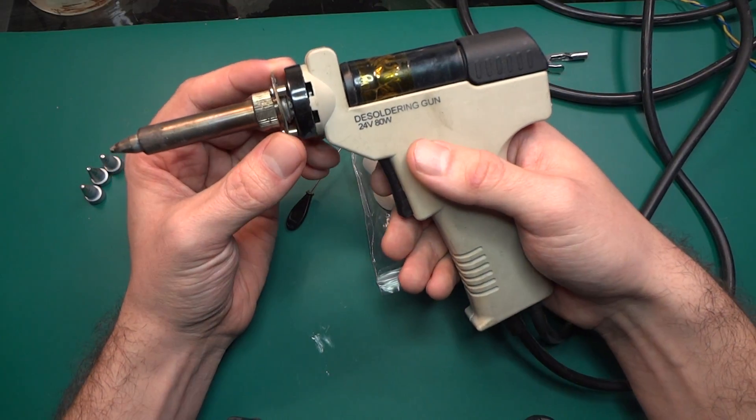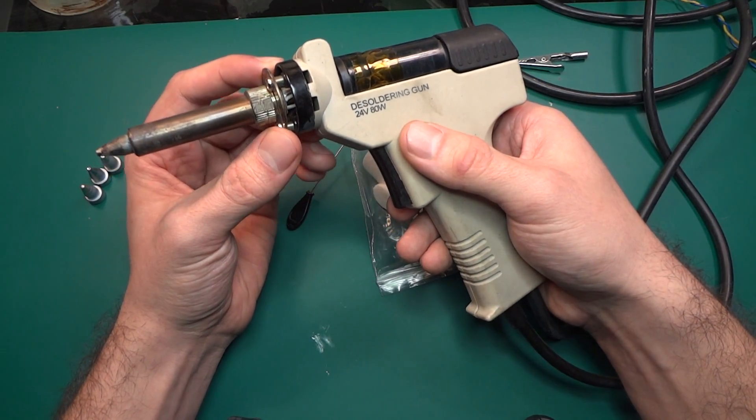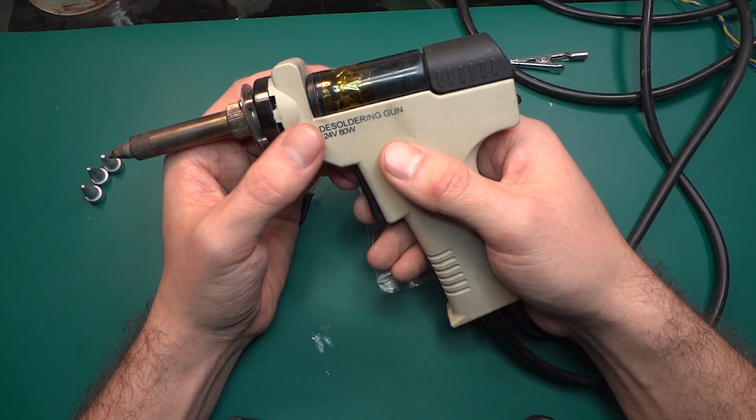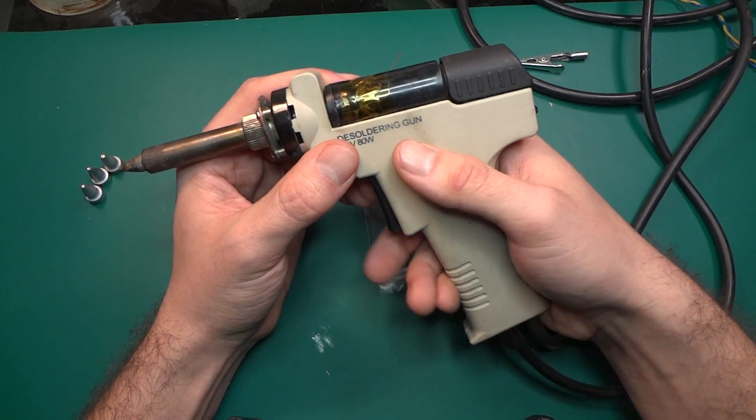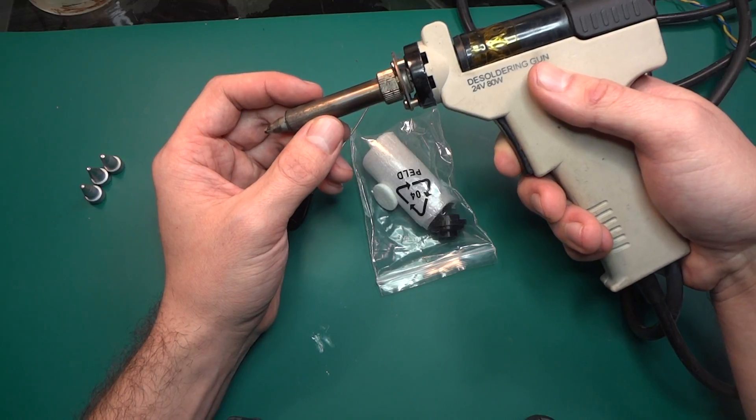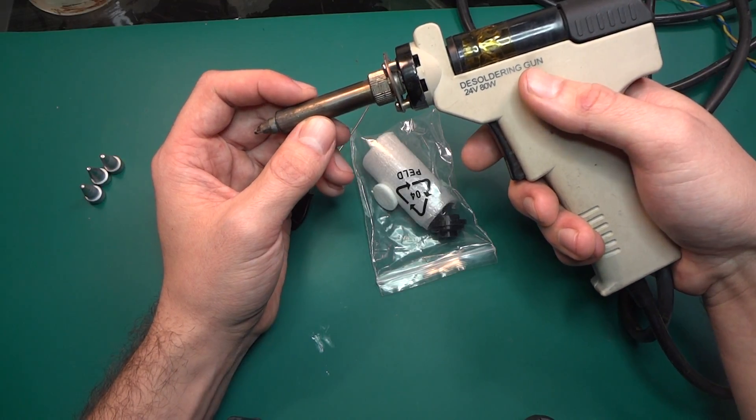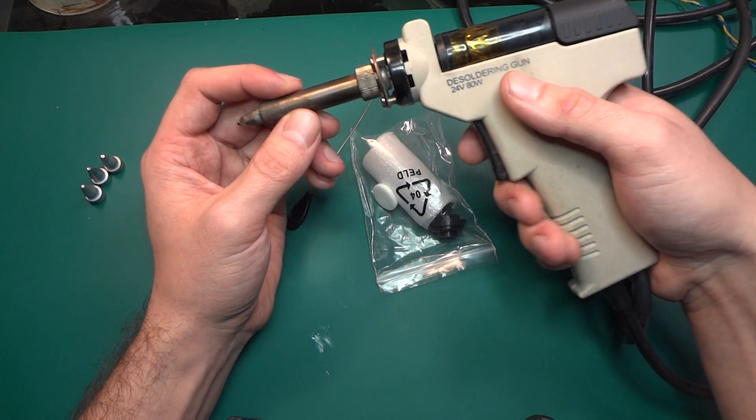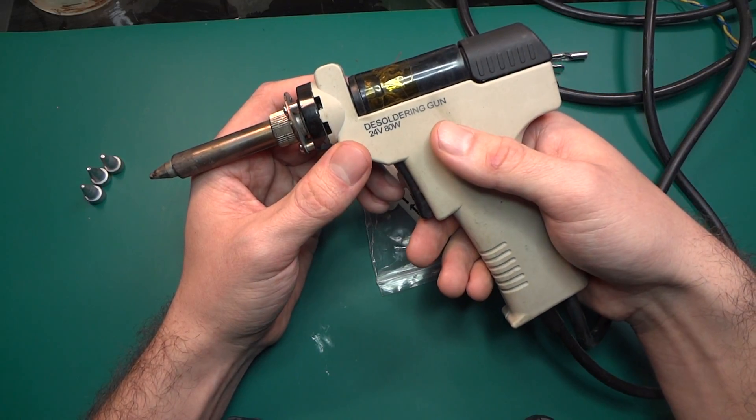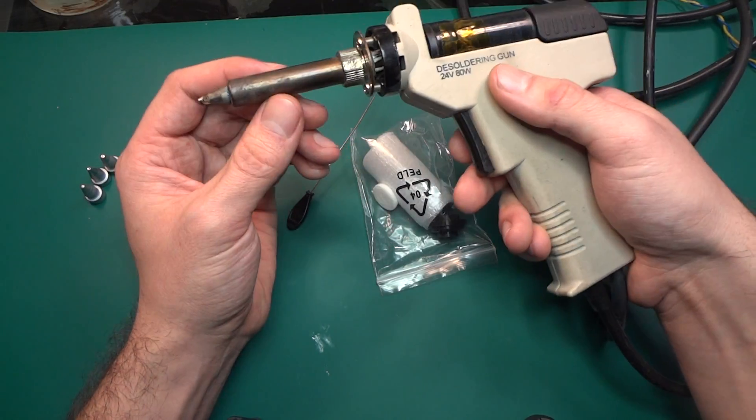Basically when I managed to clog this, I was using a low temp setting because I was soldering expensive ICs and I don't want to overheat them, so I set the low temp.